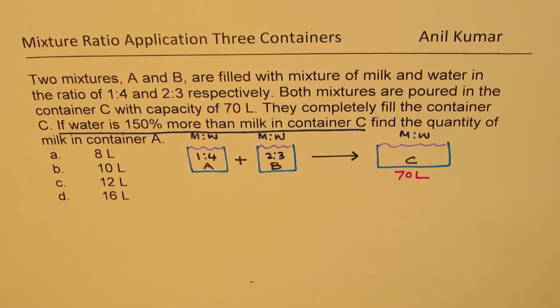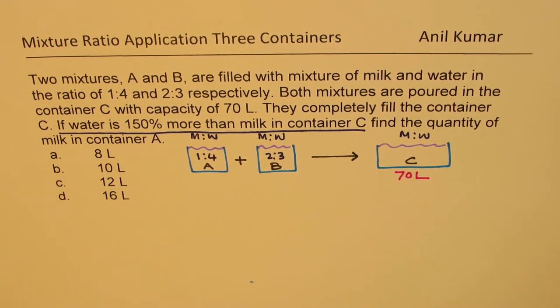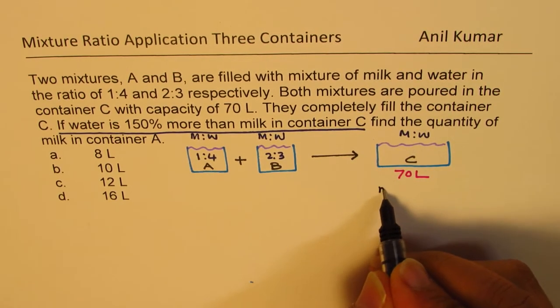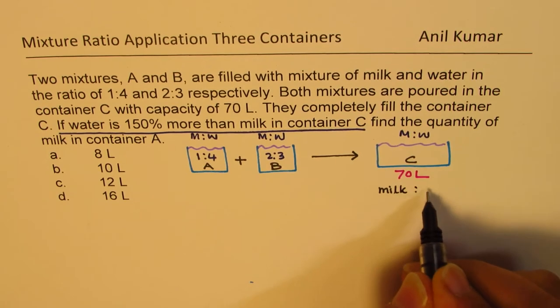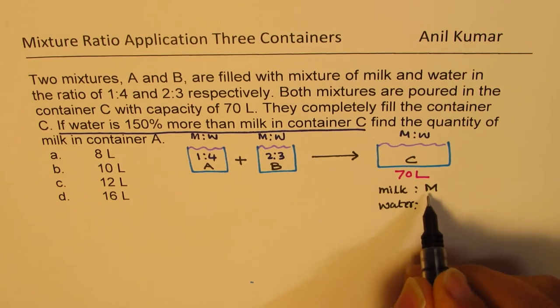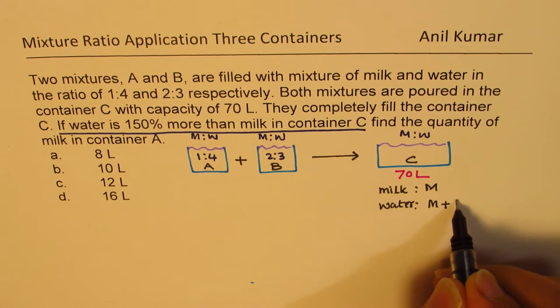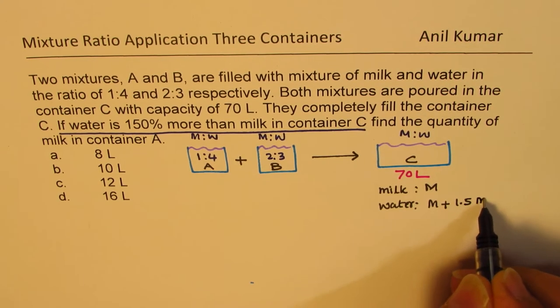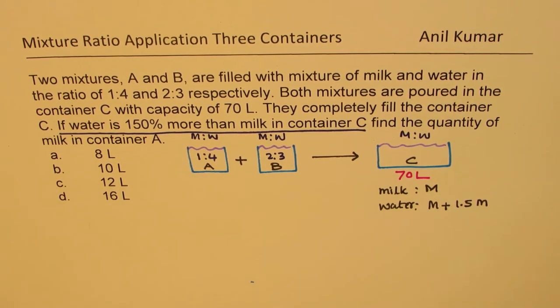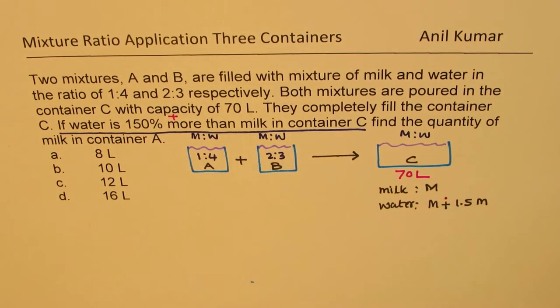So that is the situation for us. When we say water is 150%, then for container C, let us say milk is M. Then water will be how much? Water will be milk plus whatever milk M is plus 1.5 times milk. So that means 150% more. So when you have more, means you have to add.